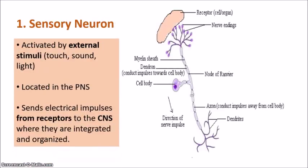Let's look at the sensory neuron first. The sensory neuron is activated by external stimuli — any change in the environment, including touch, sound, and light. You tend to find sensory neurons connected to the receptors found in your sense organs: the eye, skin, nose, ears, and mouth. The sensory neurons receive electrical impulses from these receptors and send them towards the CNS.